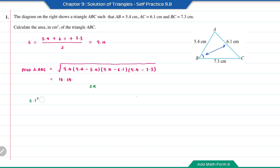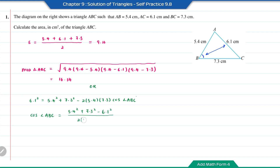Using the cosine rule: 6.1² equals 5.4² plus 7.3² minus 2 times 5.4 times 7.3 times cos(angle ABC). So cos(angle ABC) equals (5.4² plus 7.3² minus 6.1²) divided by (2 times 5.4 times 7.3). Therefore angle ABC equals inverse cos of that, which is 54.98 degrees.